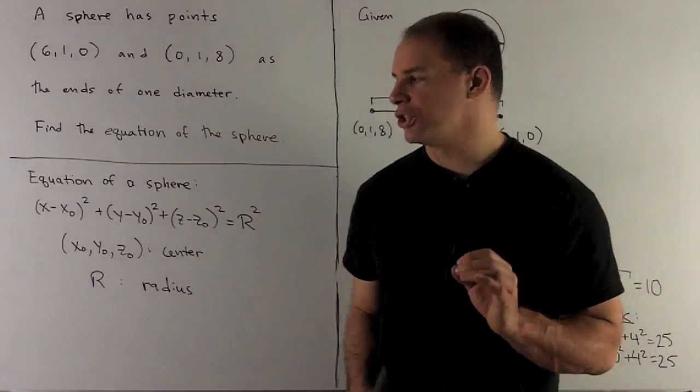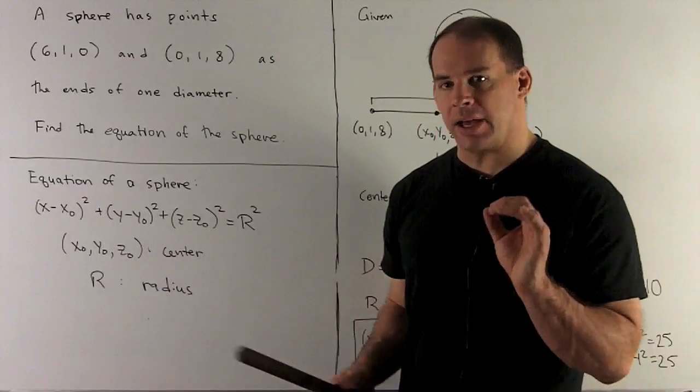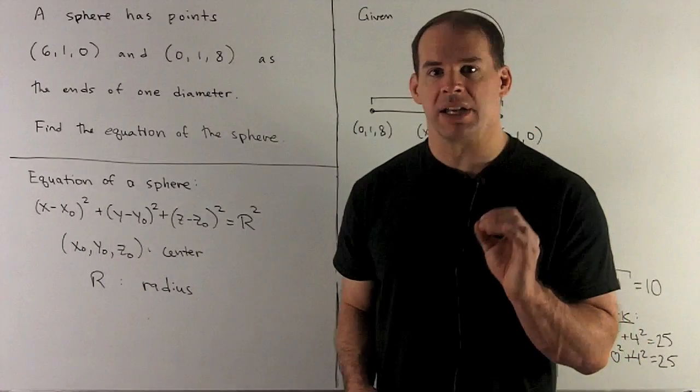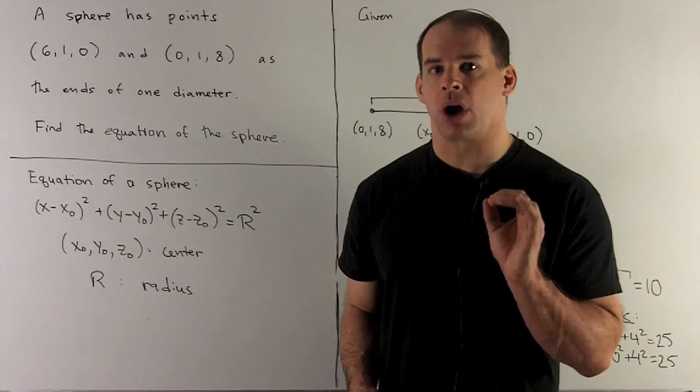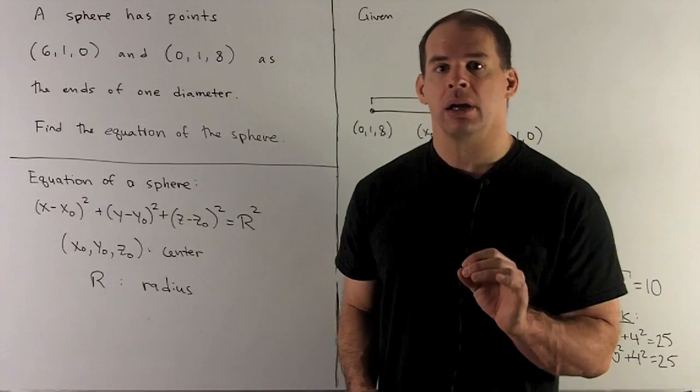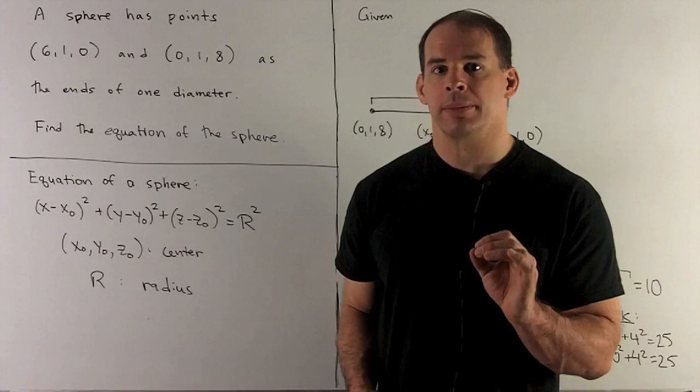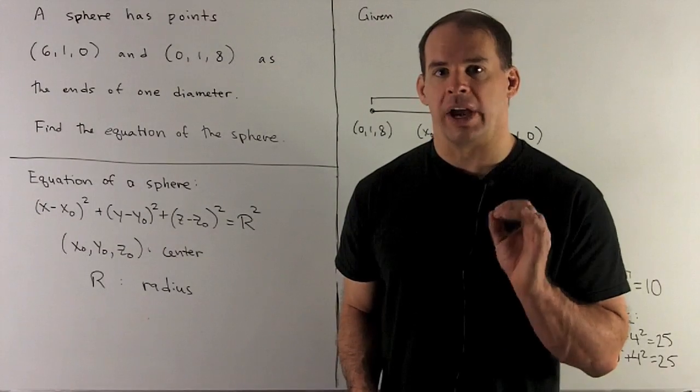First, the general equation. We'll have (x - x₀)² + (y - y₀)² + (z - z₀)² = r² where (x₀, y₀, z₀) is the center of the sphere. r is the length of the radius.